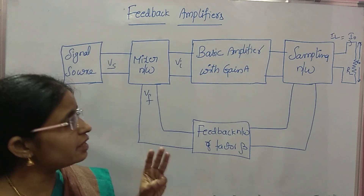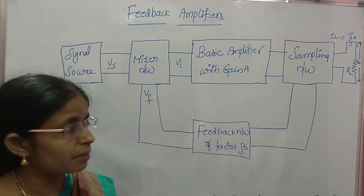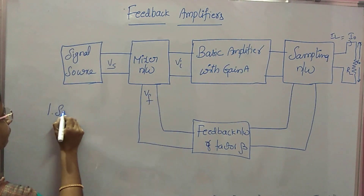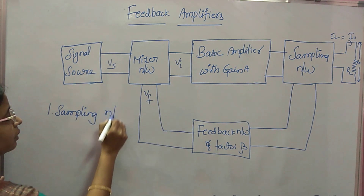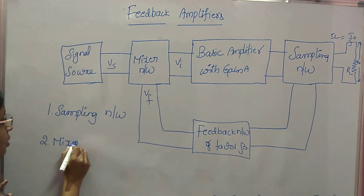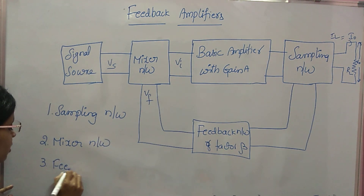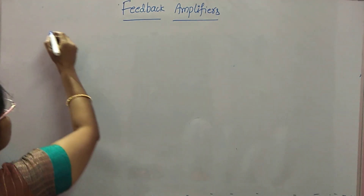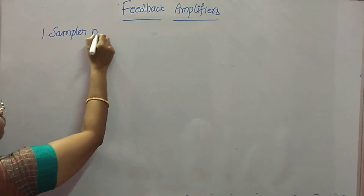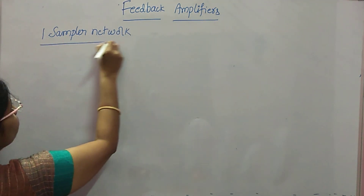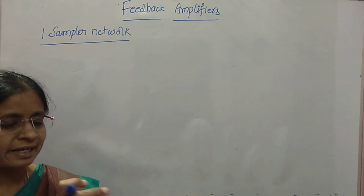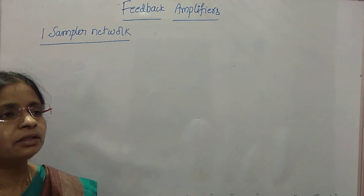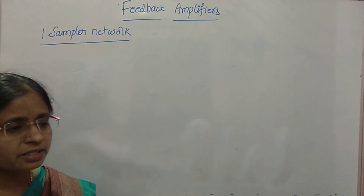We have to see three networks in detail because we already know the amplifier concept. The three networks are: sampling network, mixer network, and feedback network. The sampler network is used to connect the output voltage or output current to the feedback network, and based on the feedback factor, the proportion of output voltage or output current is connected to the mixer. Sampling can be done in two ways: voltage sampling and current sampling.